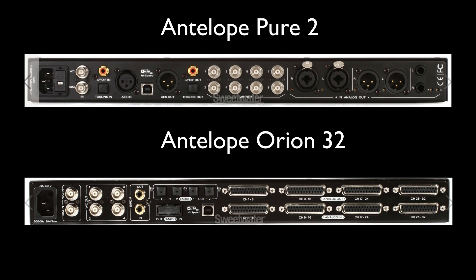Most audio interfaces have a SPDIF output and input that you can use for this. For the D to A: on the back of the Orion 32 we've got our SPDIF out and SPDIF in. We want to go SPDIF out from the Orion, and on the Pier 2 we would go SPDIF in. So output SPDIF out from your interface to SPDIF in of the D to A converter. The signal coming out of the SPDIF output is digital, and it's going to continue to be digital until it gets into the Pier 2, where it would come out of the analog outputs — and that would make the sound analog, which is your D to A conversion. Think of D to A as outputs and A to D as inputs.